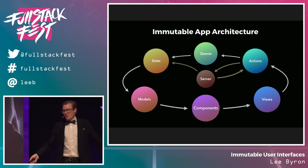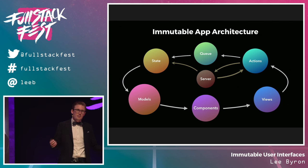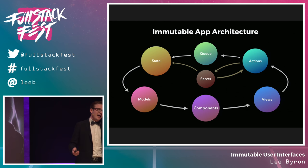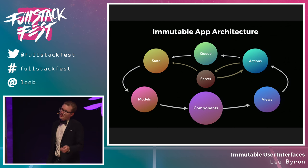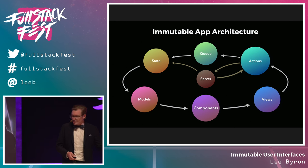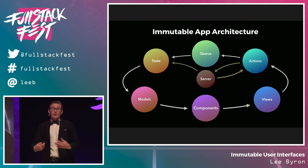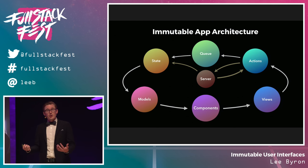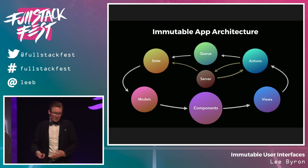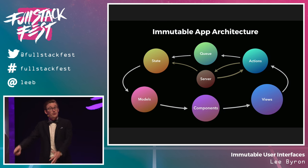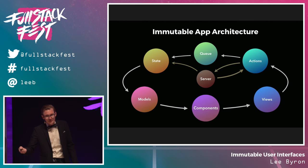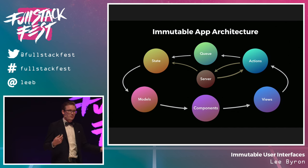Let's take one last look at this whole architecture. Components describe the data they need, which informs the shape of our immutable models, which are first created from a structured query to our servers to create initial state. Models are provided to our component rendering function, describing views that are created in the underlying UI framework. We interact with those views, creating actions that optimistically update state, are queued, and asynchronously sent to the server. When the server responds, the action is removed from the queue, state is updated, new models go back to components, and views are updated as efficiently as possible.